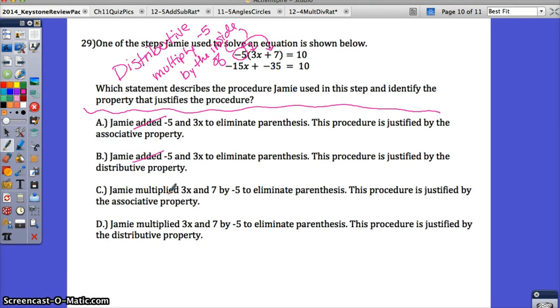You already said that he multiplied, so you can probably rule out A and B because they say added. C says multiplied, D says multiplied. Jamie multiplied 3x and 7 by negative 5 to eliminate the parentheses. This procedure is justified by the associative property. We already said it was the distributive property. The associative property is the property that allows you to regroup numbers. So it has to be D because he's multiplying and he's using the distributive property.